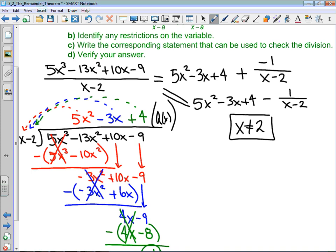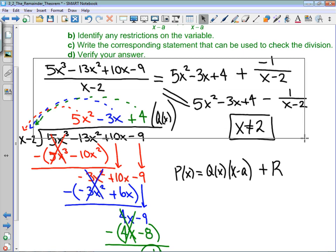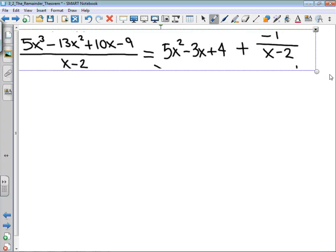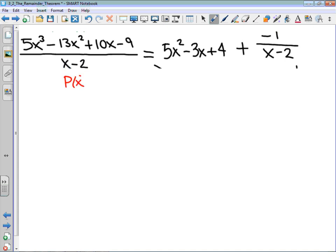Now to write the corresponding statement that can be used to check the division, really what we're going to do is manipulate that to check if P of x is equal to Q of x times x minus a plus the remainder. This is effectively just verifying our answer to see if we've done it correctly. I'm actually just going to steal this onto a new page because there's a lot of stuff going on. I think mathematically it's important that all I'm really doing here is I'm multiplying each term by x minus 2, but I'm going to write that division statement out again just to make sure we see it.